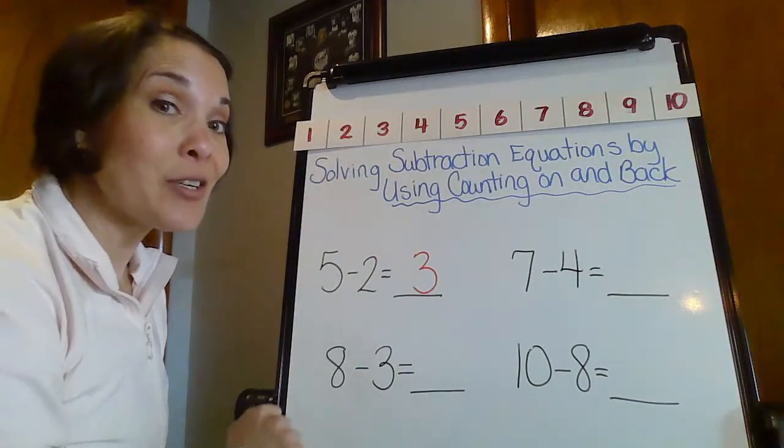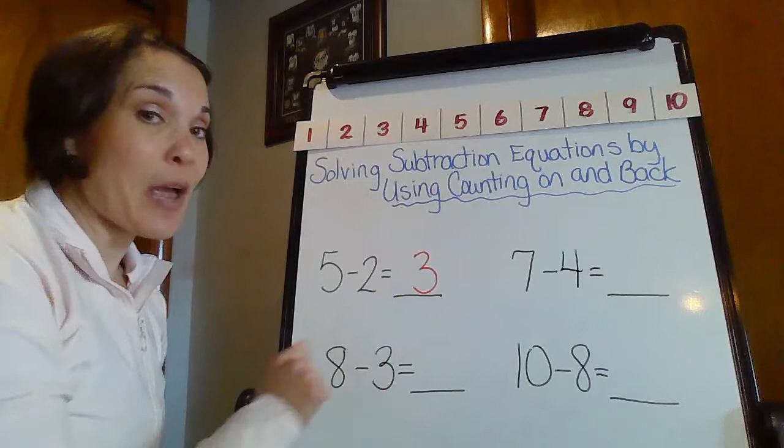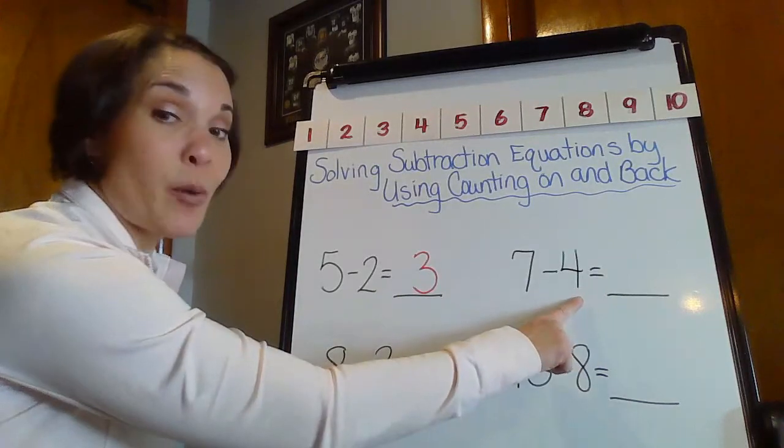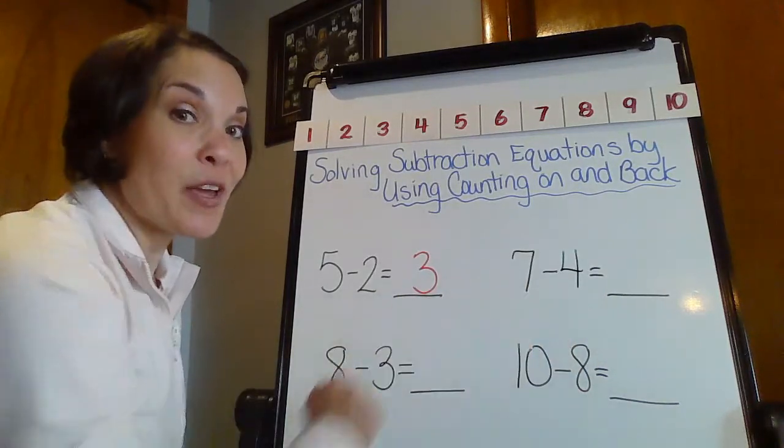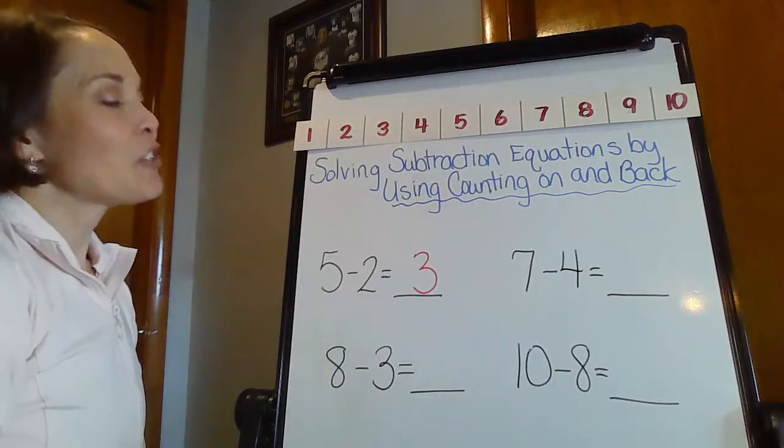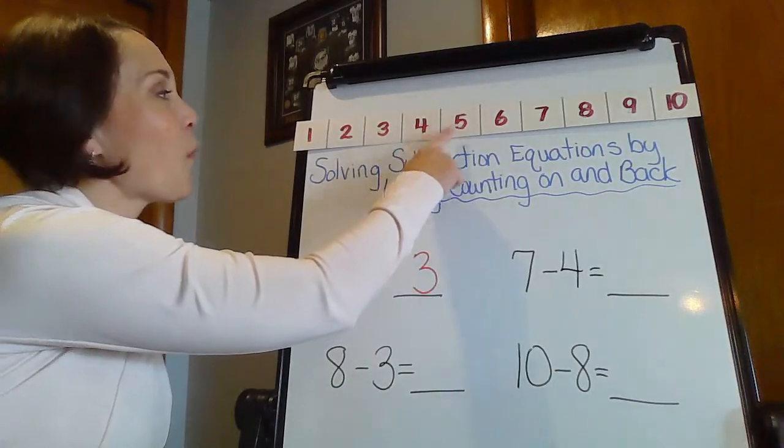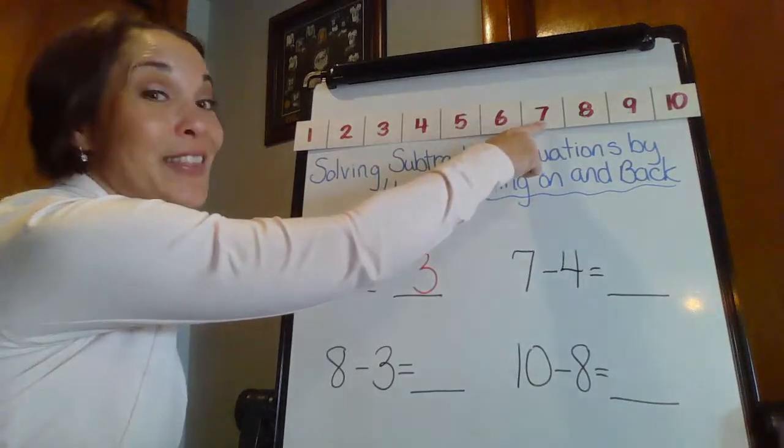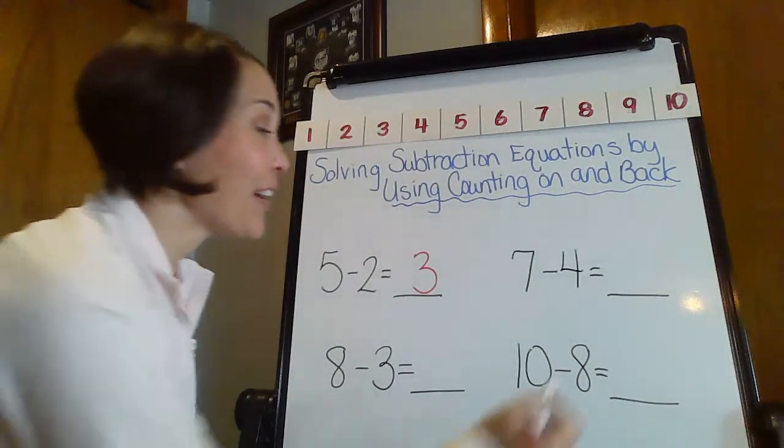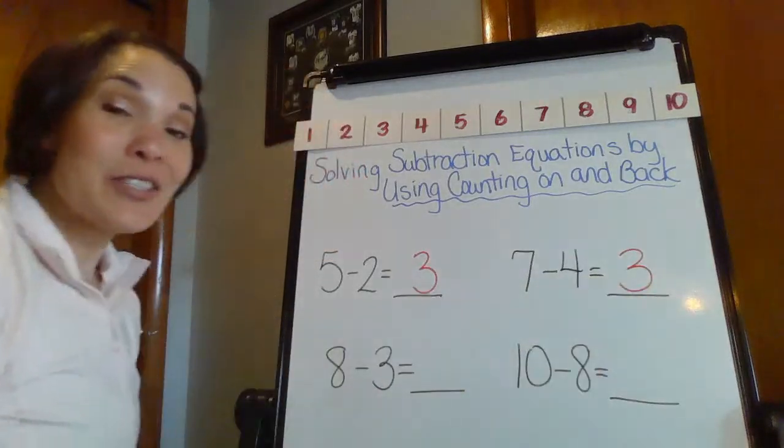But let's double check. Let's use counting on. So we're not going to start with that big number this time. I want to start with that part and count up to my whole big number. So I'm going to start with four. How many hops to get to seven? One, two, three. So therefore, you're right. Our difference is three.